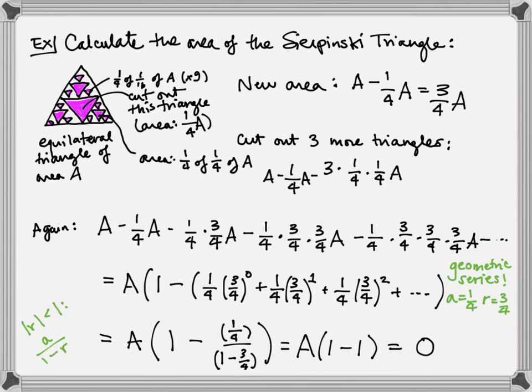So, that's kind of cool. We keep cutting out all the middle thirds of these triangles, and using a geometric series analysis, we can conclude that there's no area left by the time we get done with this process.